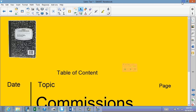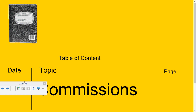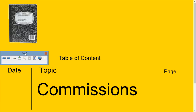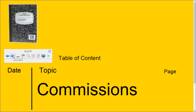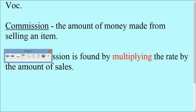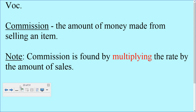Welcome back, this is Dr. Robinson and we are going to continue our studying. This time we are going to talk about commissions — that's the amount of money made from selling an item. Commission is found by multiplying the commission rate by the amount of sales, so we're going to be working on selling items today.